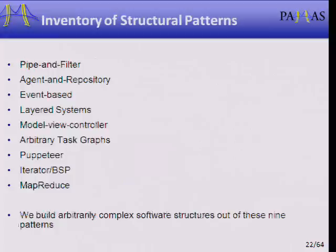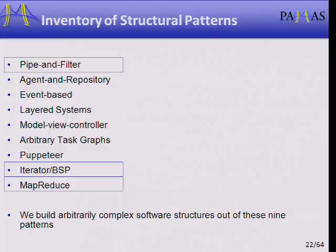Here is our inventory of nine structural patterns; here are the three I'll talk about today. With these nine patterns we can build arbitrarily complex software. If we understand these nine different ways of architecting things, we can build as large a building or factory as we want. The first, perhaps the simplest, is pipe and filter. The filters are where computation happens. The computation only sees inputs and produces outputs — no global or shared state. This is ideal from a modularity standpoint: if I'm implementing a filter, all I need to know is what my inputs are and what I'm supposed to output.